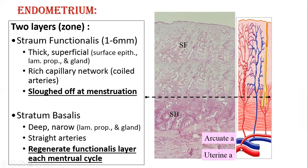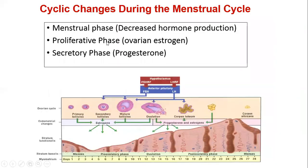Uterine arteries give rise to arcuate arteries; from arcuate arteries we have radial arteries which undergo spiral curves in the stratum functionalis, then gradually form straight arteries and capillaries. Cyclic changes during the menstrual cycle include three phases: the menstrual phase, the proliferative phase, and the secretory phase.